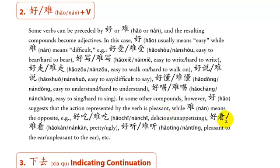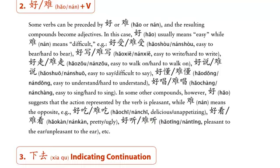好看 — pretty; 他好看, she's very pretty. 难看 — ugly; 他难看, he is ugly. 好听 — 听 means listen; 好听, that music is wonderful, beautiful, pleasant to listen to. 难听 — that song sounds horrible; 这首歌难听, this song is unpleasant. 这首歌好听, this song is very nice.